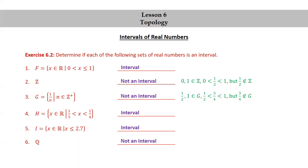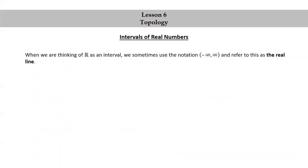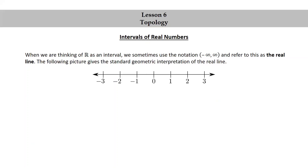Q, the set of rational numbers, is not an interval. For example, 0 and 1 are rational numbers, and we could find irrational numbers between 0 and 1 — for example, the irrational number 0.010010001... and so on. When we think of R as an interval, we sometimes use the notation (−∞, ∞) in parentheses and refer to this as the real line. The following picture gives the standard geometric interpretation of the real line.